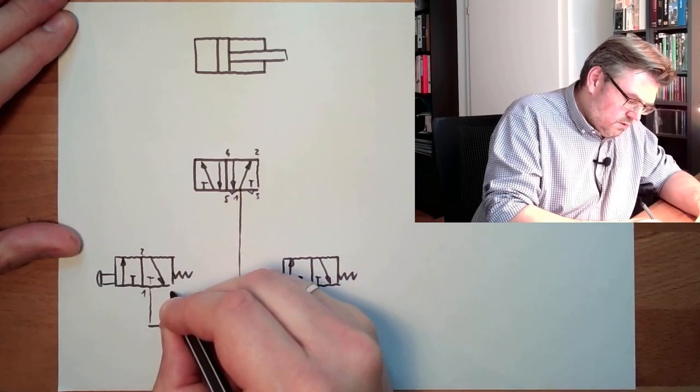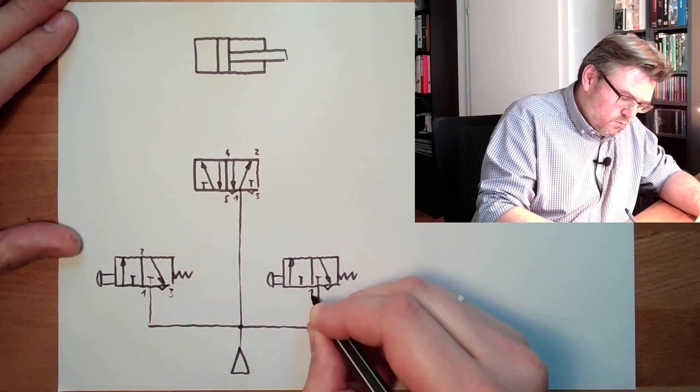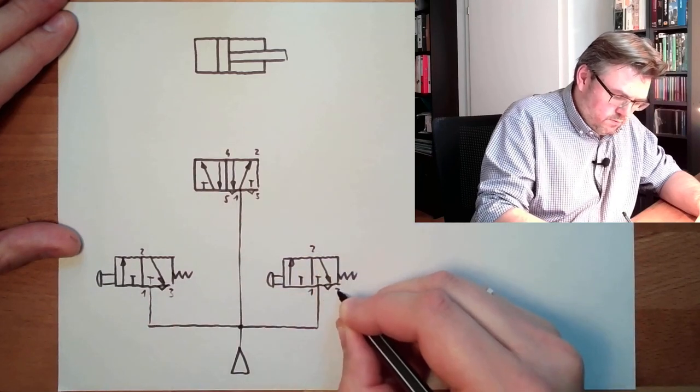and here we are also connecting to the pressure source. So this is 1, this is 2, this is 3, this is the exhaust opening, 1, 2, 3.